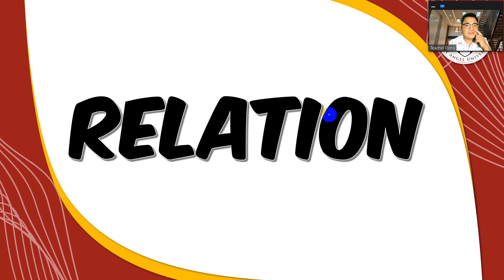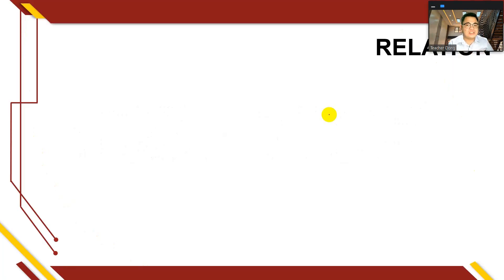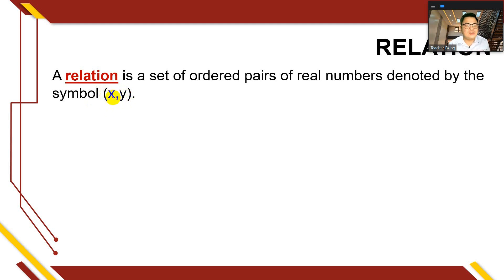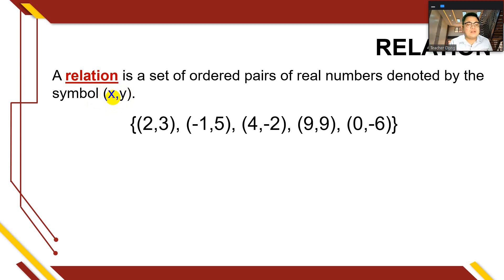Now let's talk first about relation. Before we can get the definition of function, we have to have the definition of relation. When we say relation, it is a set of ordered pairs of real numbers denoted by the symbol (x, y). For as long as we have the ordered pair x and y, we call it a relation. The x is the x-value and y is the y-value. When plotting points in the Cartesian plane, we should have x and y to plot a point.